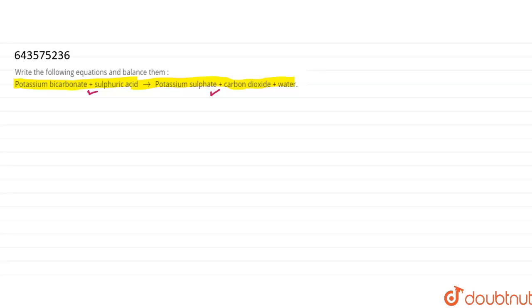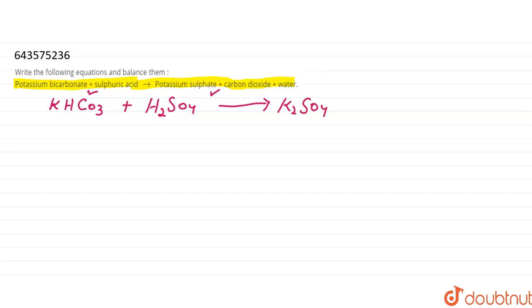For this, we have to convert this equation into symbolic form. Potassium bicarbonate is KHCO₃, plus sulfuric acid H₂SO₄, forming K₂SO₄ (potassium sulfate) plus carbon dioxide plus water.